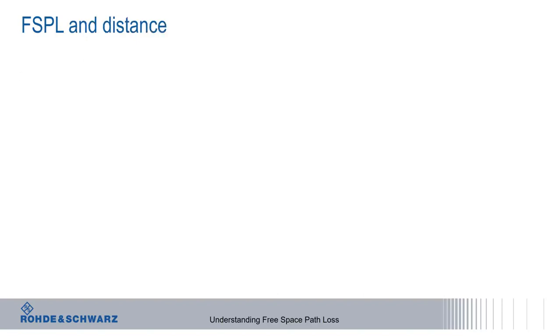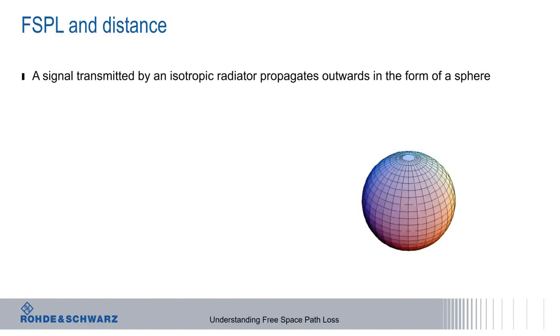The relationship between free space path loss and distance is fairly intuitive. As you probably already know, a signal that is transmitted by an isotropic radiator in free space propagates outwards in the form of a sphere. Remember that the surface area of a sphere is 4 pi d squared, where d is the radius of the sphere.